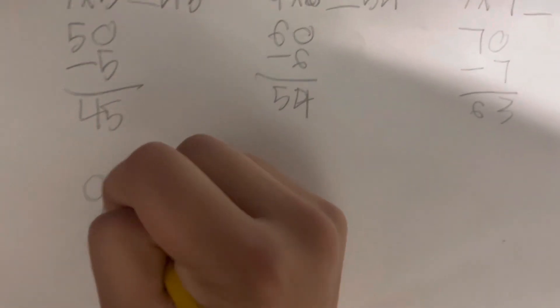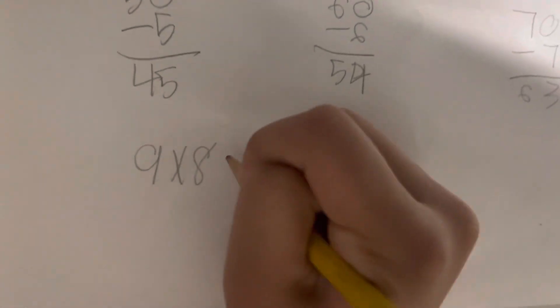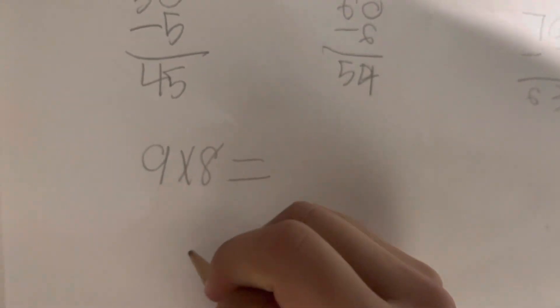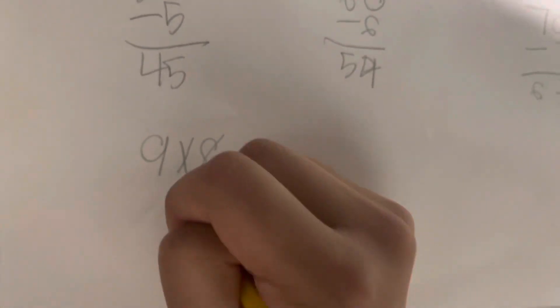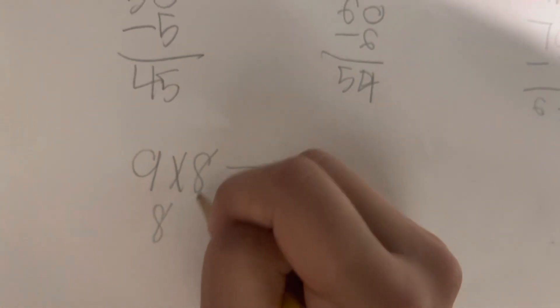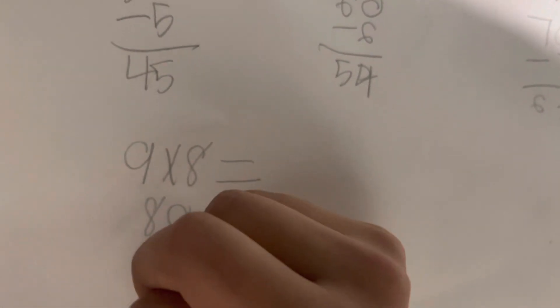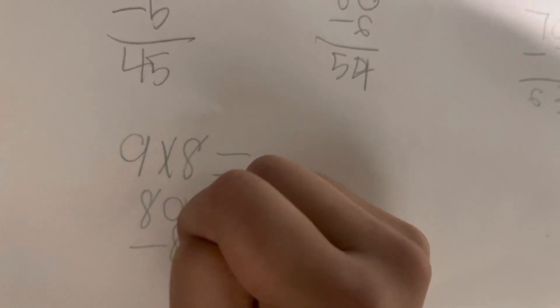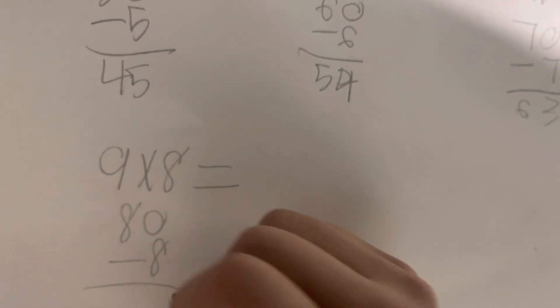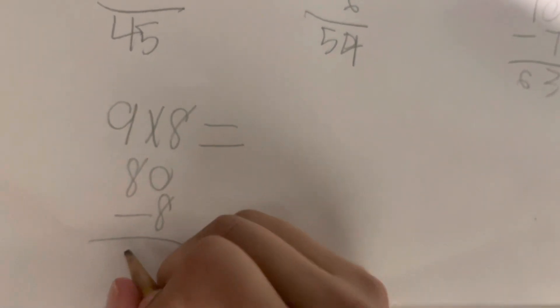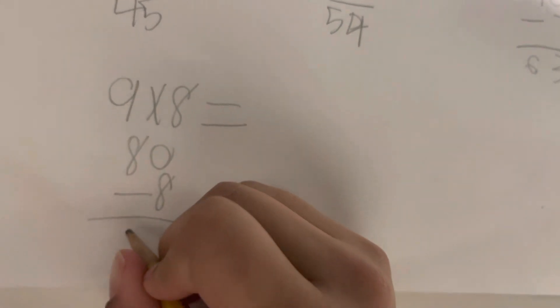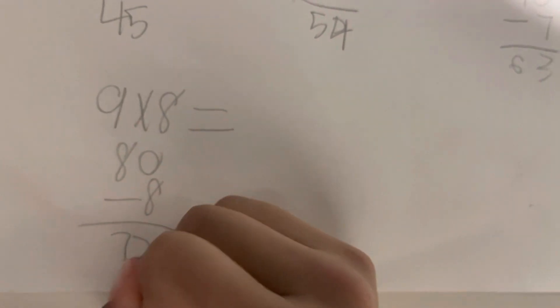9 times 8 equals. You add the same number, then add a 0, then minus the same number. It equals 72.